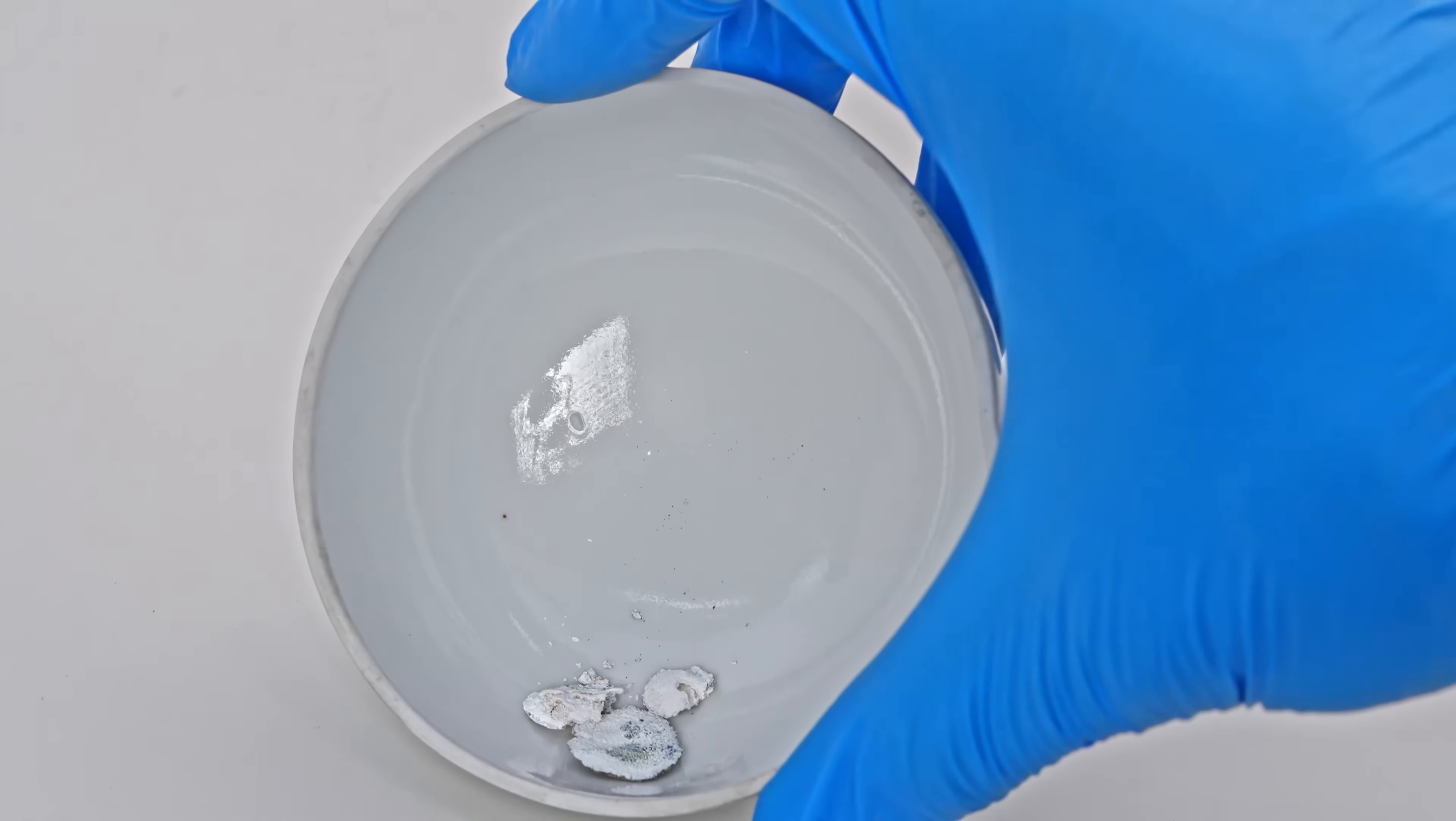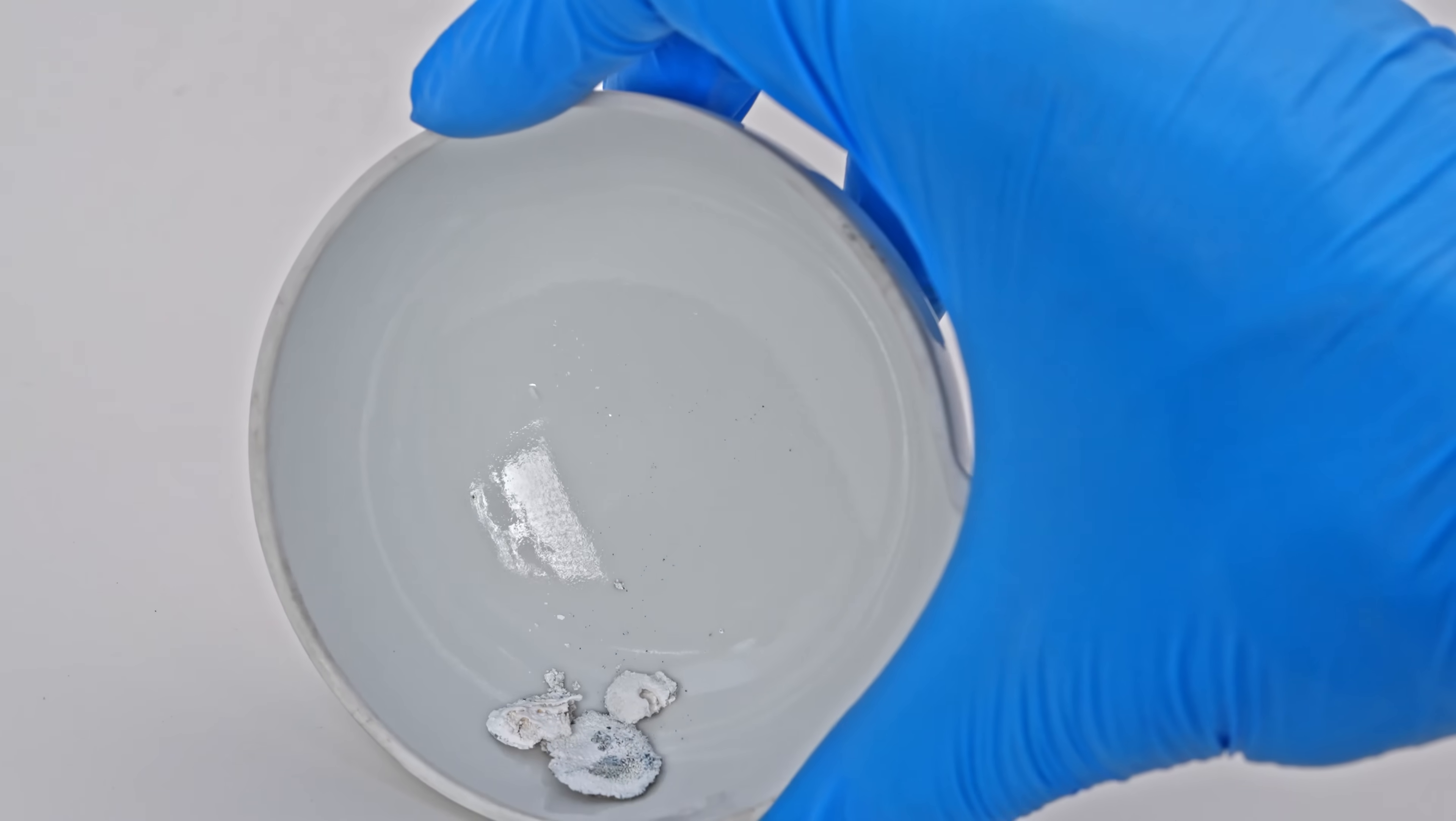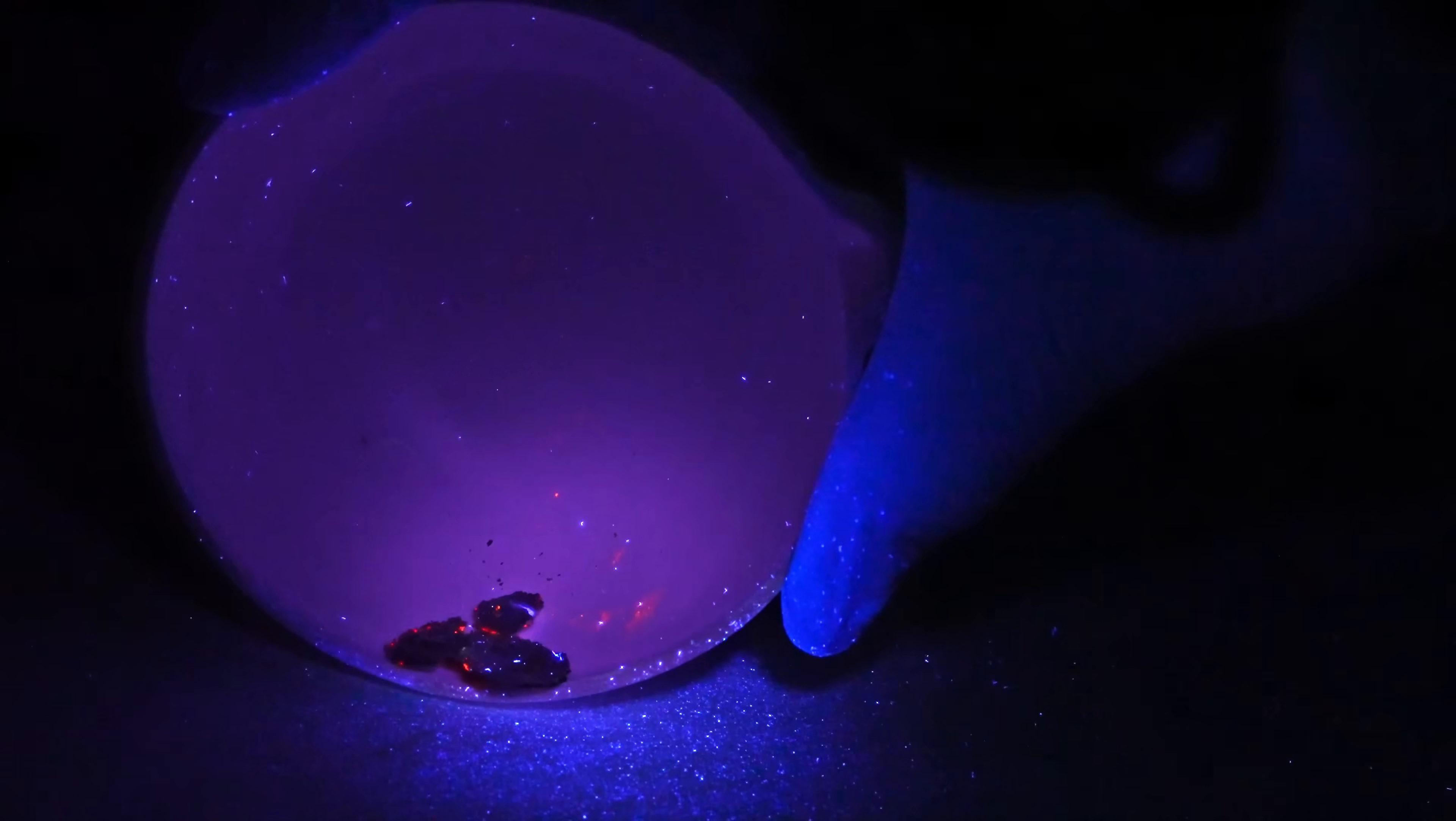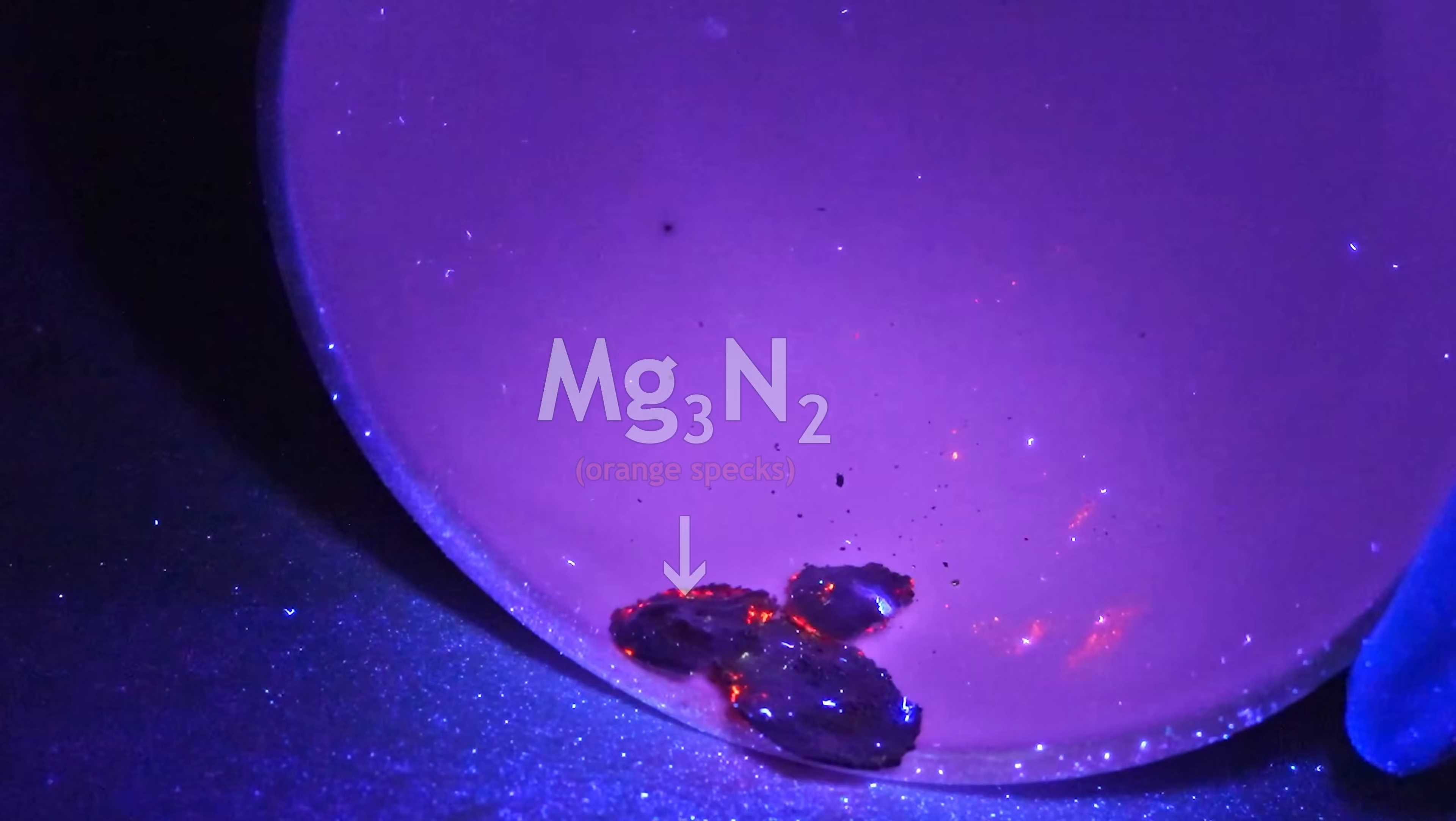But what happens if we look at this powder under ultraviolet light? You can see orange specks, which are magnesium nitride, formed during the burning of magnesium in air due to its reaction with nitrogen.